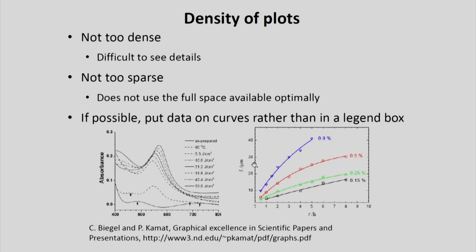Here are two examples of plots. The one on the left side is a bit too dense, and it has another problem: because colors have not been used, it is very difficult to figure out the dotted lines, the dash lines, the dot-dash lines, and so on — it is not easy to tell which one it refers to. If possible, put the data labels on the curves themselves rather than in a legend box, as shown in the figure on the right, which we can think of as a good plot. It is clear, simple, and easily legible. Color has been used, and the values 0.8, 0.5, etc., are written next to the plot itself. That is not always going to be possible, but if at all possible, please do that rather than using a legend.